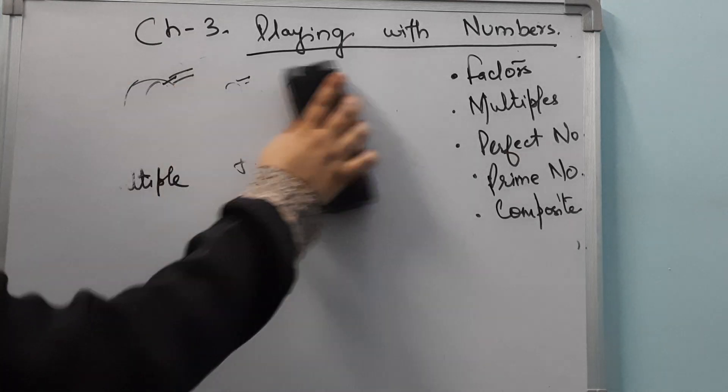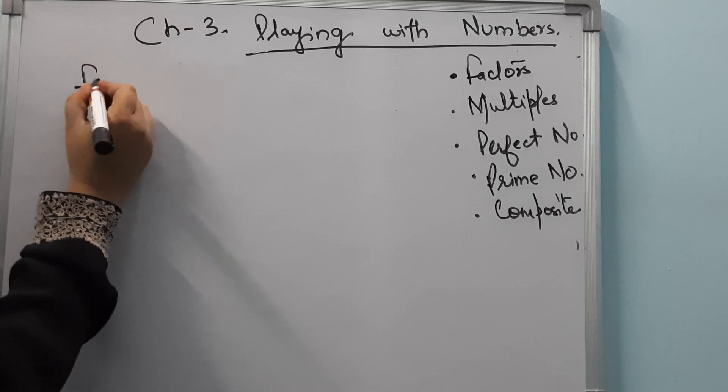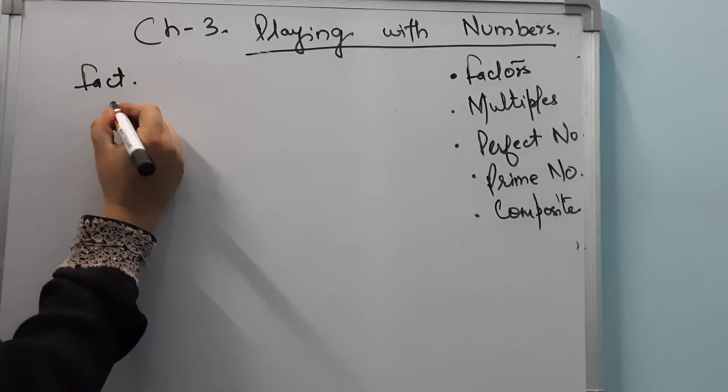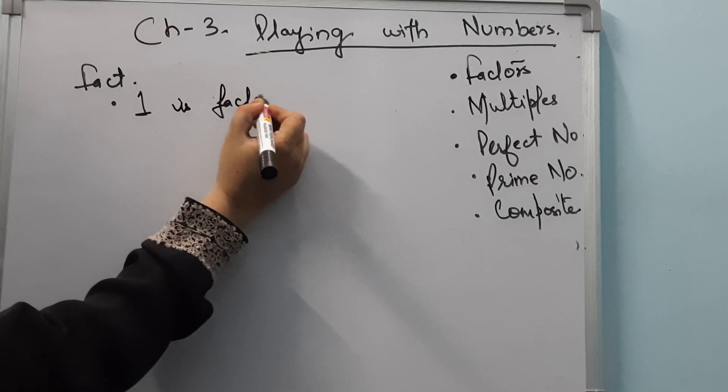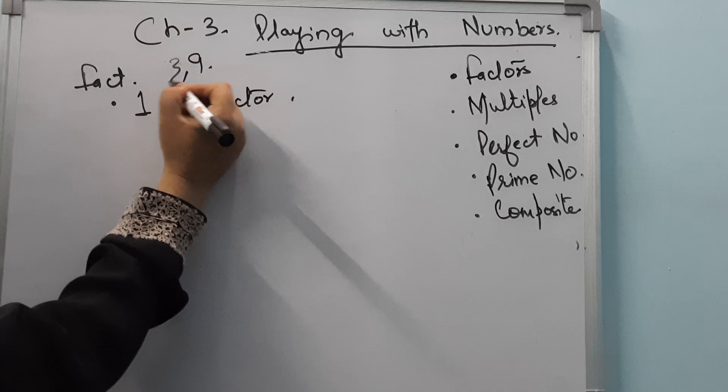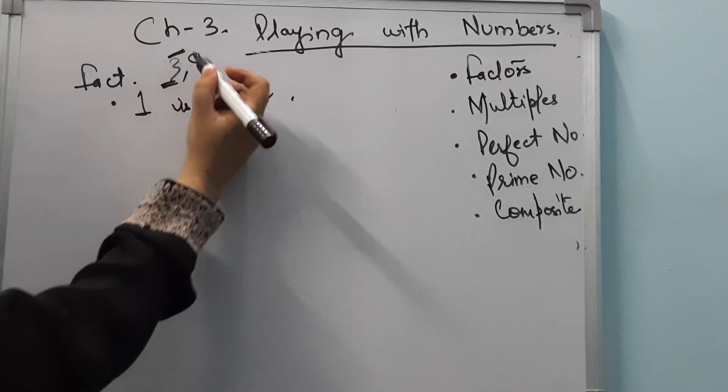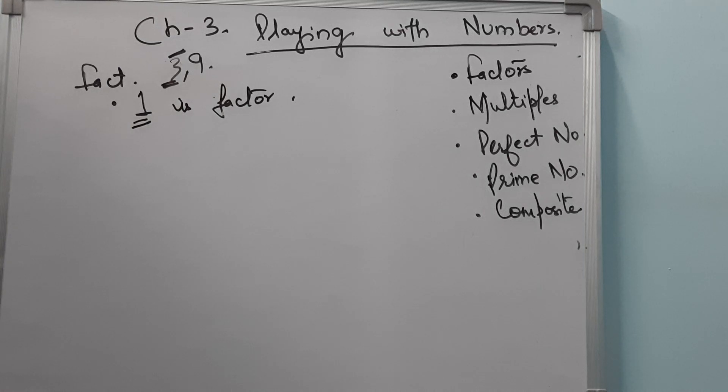Now we will discuss facts about factors and multiples. Fact 1: 1 is a factor of every number. For example, 3, 9, all numbers are completely divisible by 1.